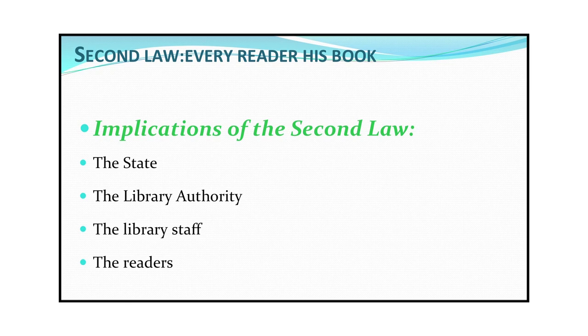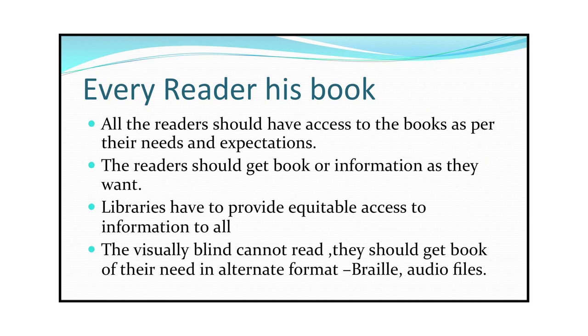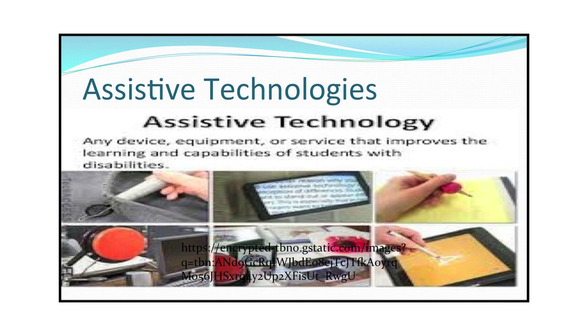Now we will talk about the second law: every reader his book. The second law emphasizes that all readers should have access to books as per their needs and expectations. Libraries have to provide equitable access to information to all. Even the visually blind or those who cannot read should get books of their need in alternate format. Alternate format means libraries should offer books in braille, audio files, or digital files. Libraries should deploy assistive technologies to help people with different disabilities.